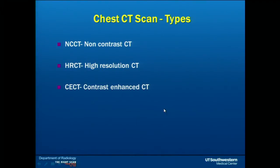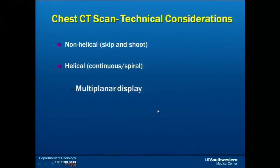As we all know, we have three types of chest CT scan: non-contrast chest CT, high-resolution, and contrast-enhanced CT of the chest. There are two ways to do a CT scan of the chest: a non-helical or skip-and-shoot method, and a helical or continuous spiral method.